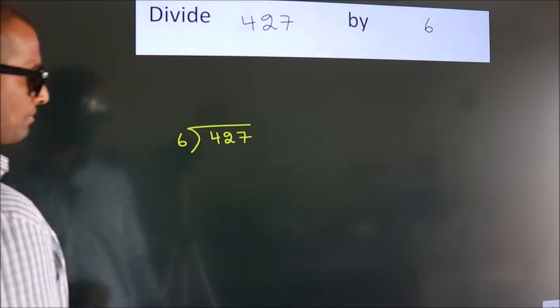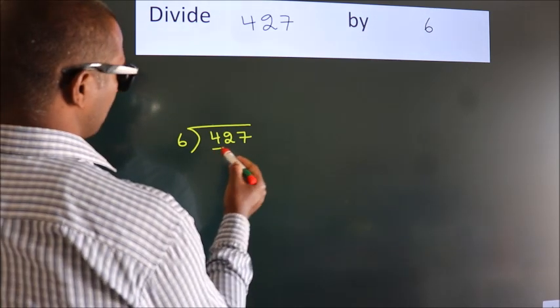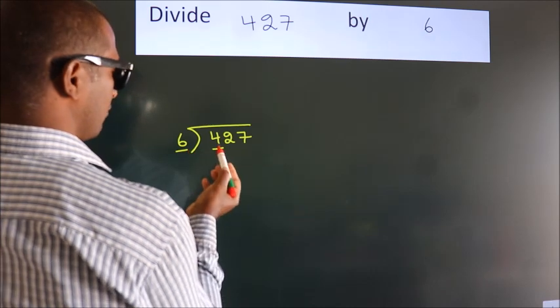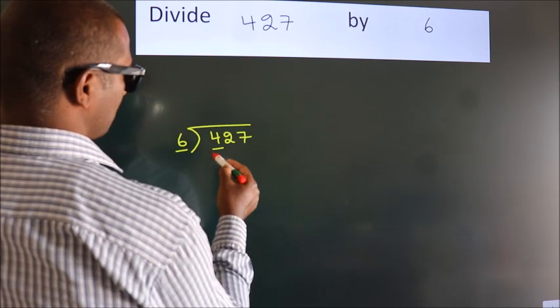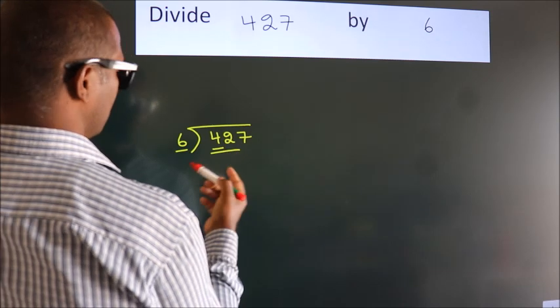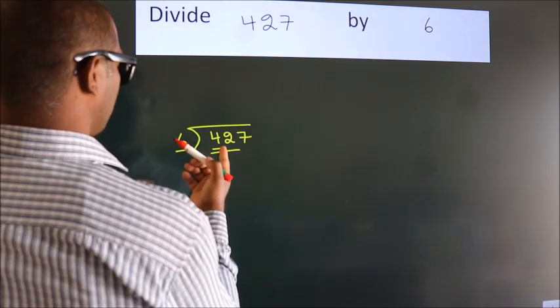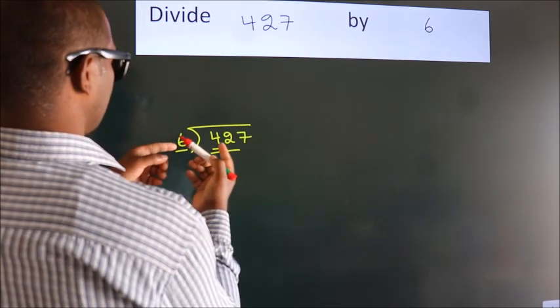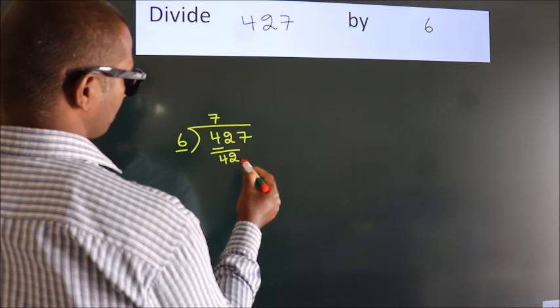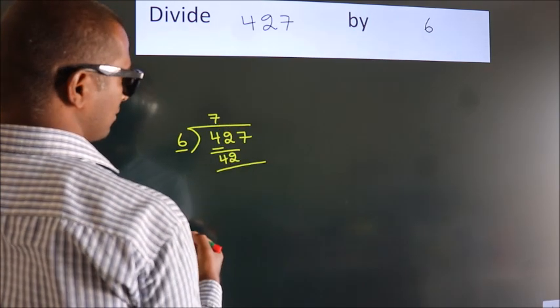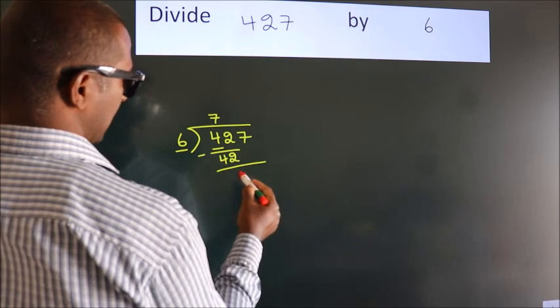Next. Here we have 4, here 6. 4 smaller than 6. So we should take 2 numbers: 42. When do we get 42? In 6 table, 6 times 7 is 42. Now we should subtract. We get 0.